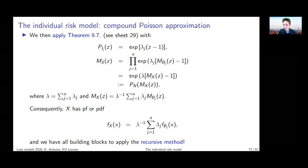To conclude, it's important to have the individual risk model formulation in mind, understand how to derive the mean and variance, and be able to propose meaningful strategies — parametric approximations or the compound Poisson approximation — for the distribution of the aggregate loss S.